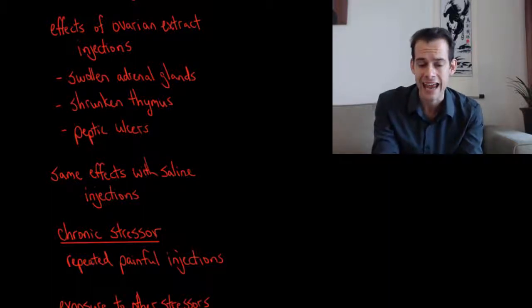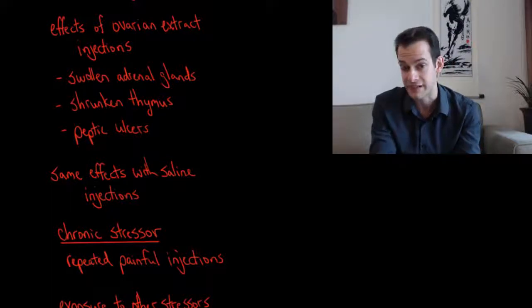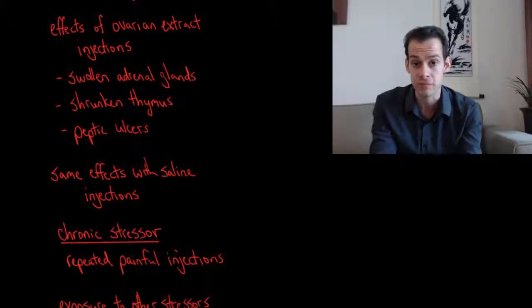And what he found was the rats who were given these repeated injections had swollen adrenal glands, a shrunken thymus, and they developed peptic ulcers, which are small holes in the lining of the stomach.